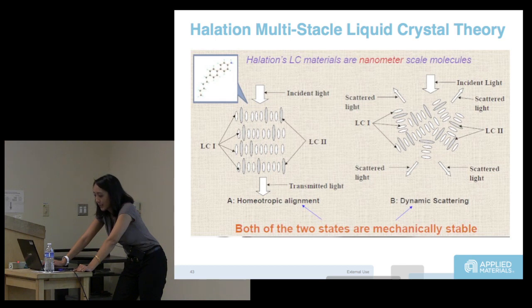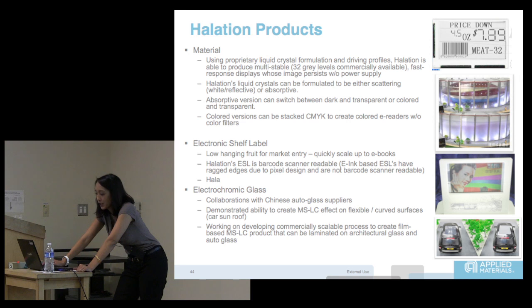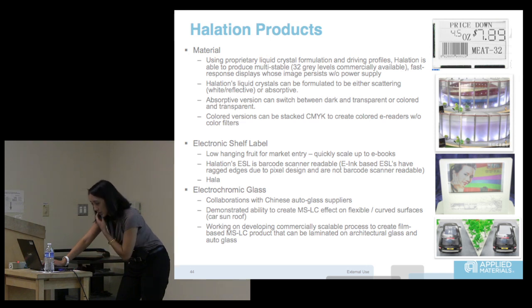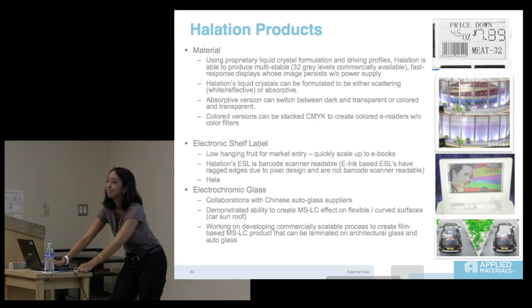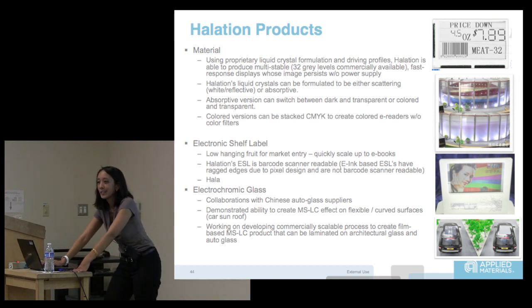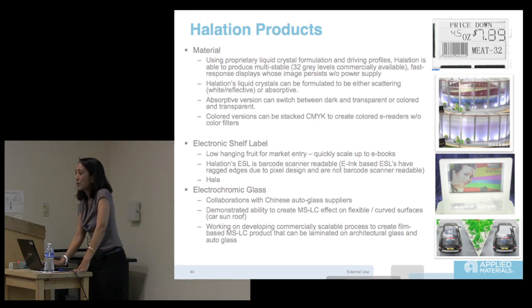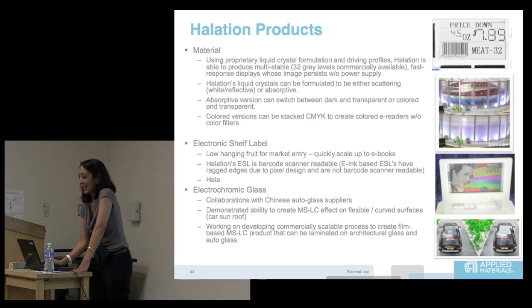They have their own proprietary liquid crystal formulation. They're selling about a million dollars' worth of electronic shelf labels today into the Walmarts of China, which is a great market for them. We also invested because of electrochromic glass — does anybody know what that is? It's about $80 per square meter today, very expensive — as complicated as making a battery, with anode, cathode, and multiple layers.